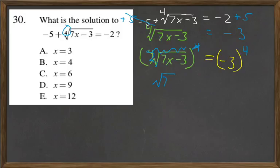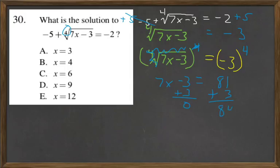So we have 7x minus 3 equals negative 3 to the 4th power, which is 81. Now let's add 3 to both sides, and we get 84.